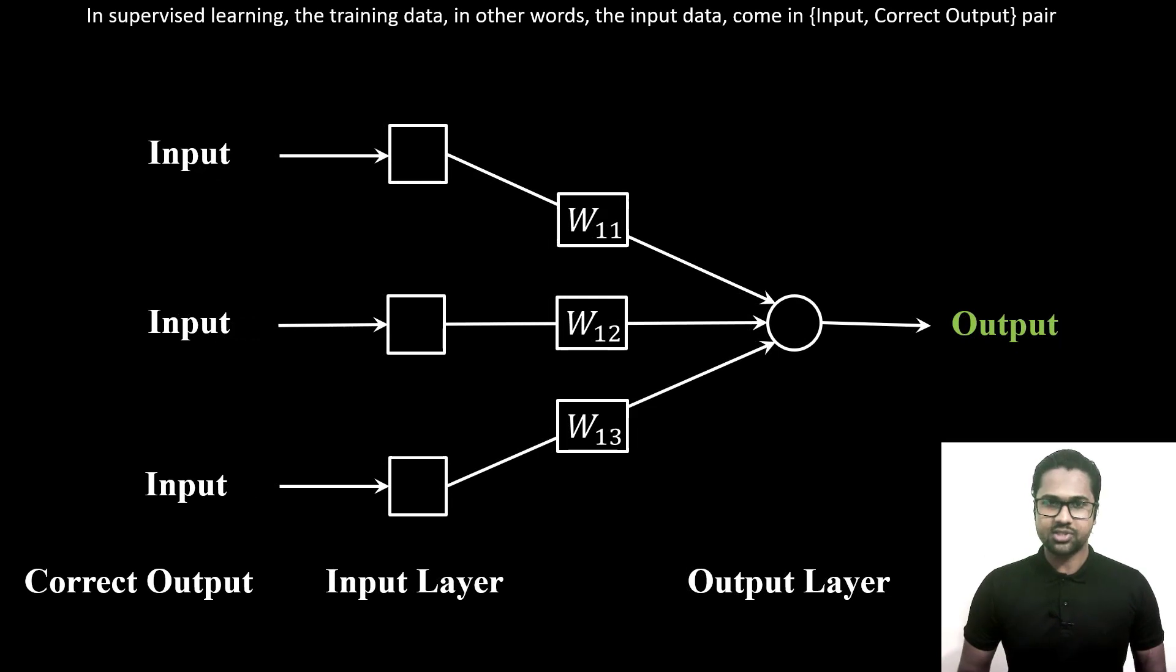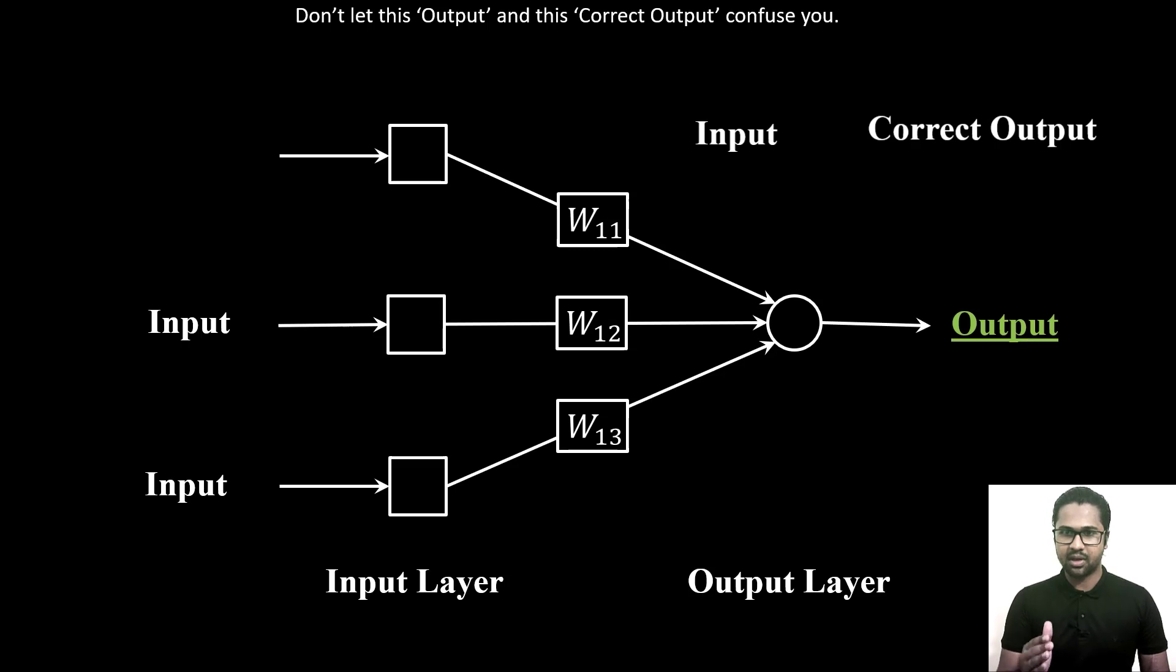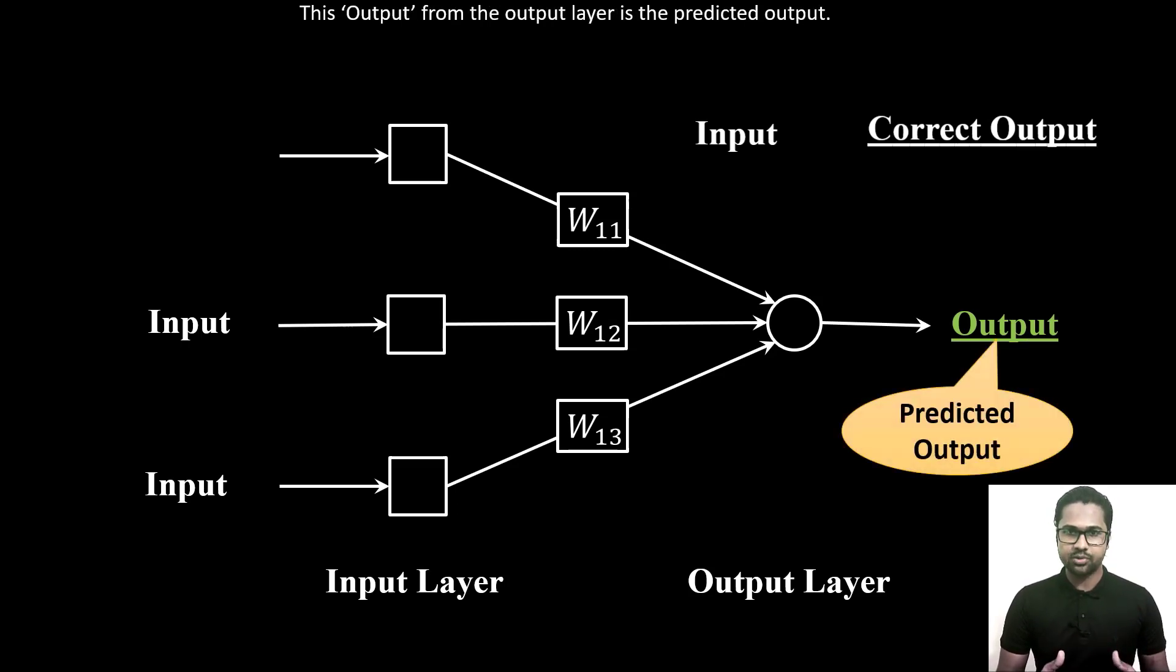In supervised learning, the training data, in other words the input data, come in input-correct-output pairs. Don't let this output and this correct output confuse you. The output from the output layer is the predicted output.